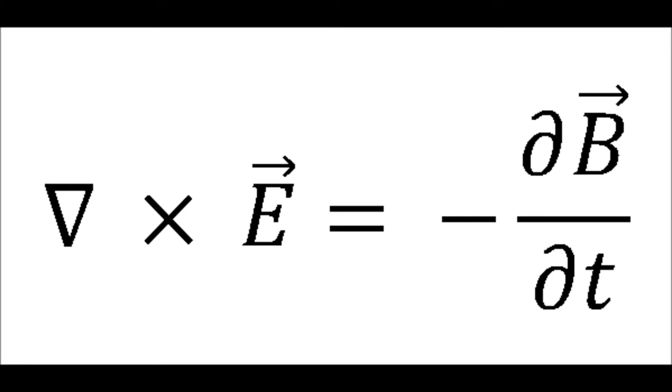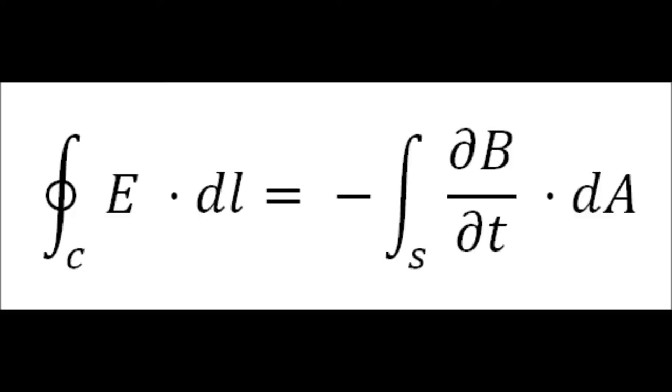The Maxwell-Faraday equation is one of his four equations that link Faraday's law, which states that a time-varying magnetic field is always accompanied by a spatially-varying, non-conservative electric field, and vice versa.